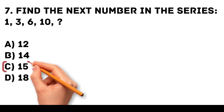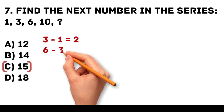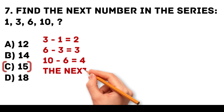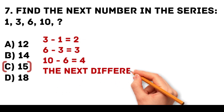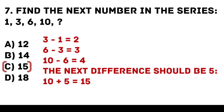Answer: C. 15. The differences between the numbers increase by 1. 3 minus 1 is equal to 2. 6 minus 3 is equal to 3. 10 minus 6 is equal to 4. The next difference should be 5. 10 plus 5 is equal to 15.